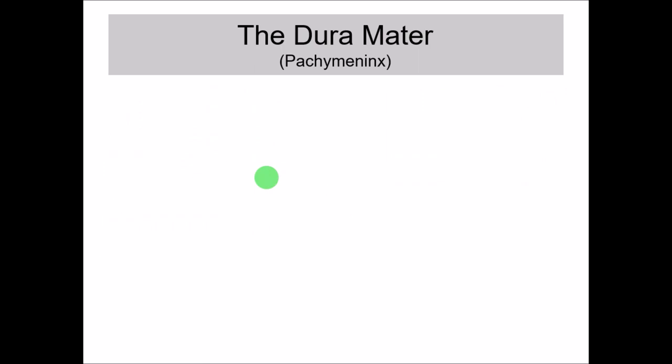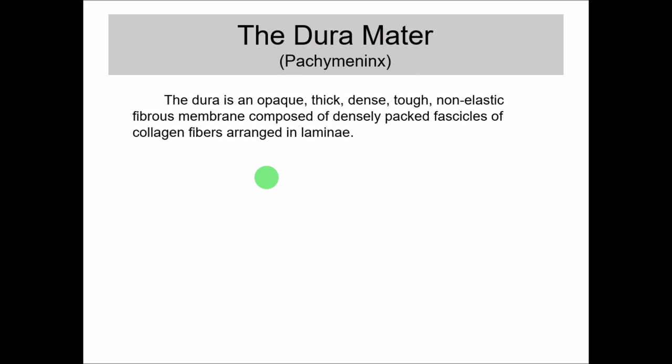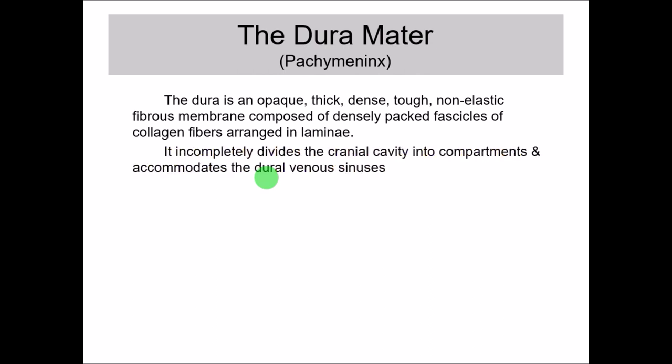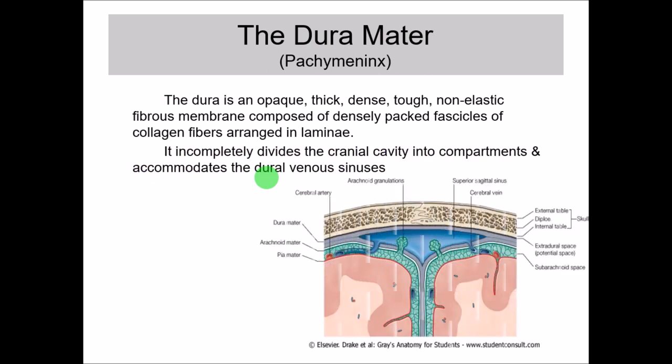The dura mater is an opaque, thick, dense, tough, non-elastic fibrous membrane composed of densely packed fascicles of collagen fibers, which is why it is thick, dense, and opaque, arranged in the form of laminae. It incompletely divides the cranial cavity into compartments and also accommodates the dural venous sinuses - the spaces between the dura mater itself.